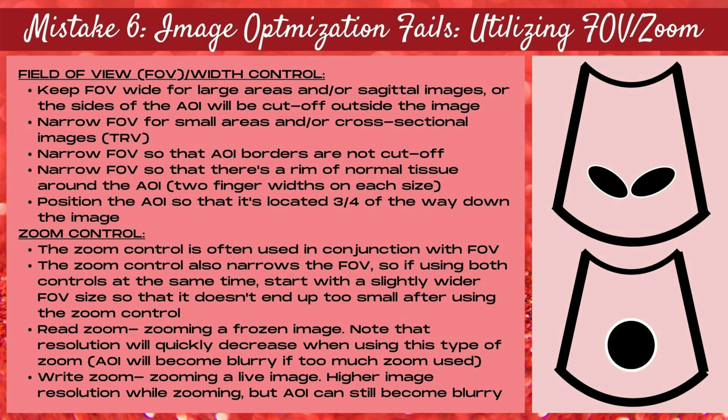Position the area of interest about three quarters of the way down the image. Two things that can go wrong with the field of view control: number one, you make it too small and cut off the sides of your area of interest or don't show surrounding tissue; or number two, you forget that the field of view is narrowed and then image a large structure such as the sagittal kidney, cutting off its sides. The zoom control is often used with the field of view, but note that zoom also narrows your field of view — so start with a slightly wider field of view when using both.